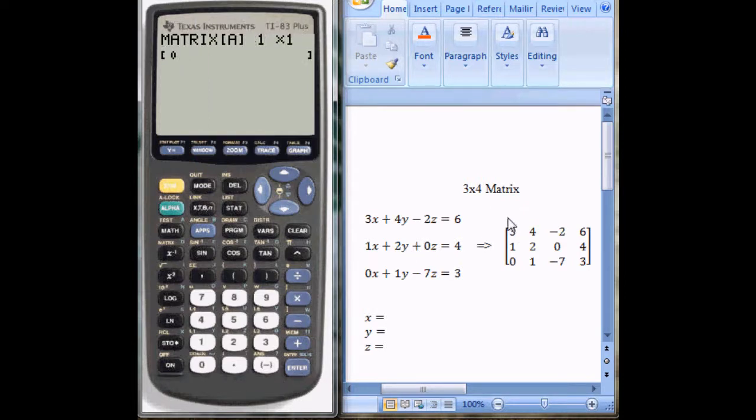As you can see, this is a 3 by 4 matrix: 3 rows and 4 columns. So we'll input 3, arrow over, and 4.